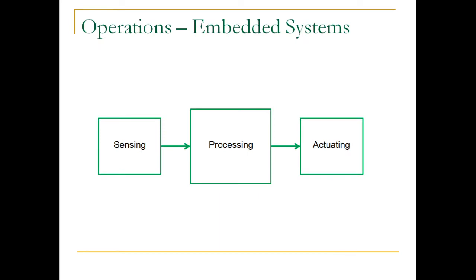So let us see what are the basic operations done by an embedded system. Whatever embedded system you take, only three operations will be done. The first operation will be sensing, the second operation will be processing, and the last operation will be actuating. Whatever embedded device you take, whatever operations they are doing, it can be classified into these three categories.